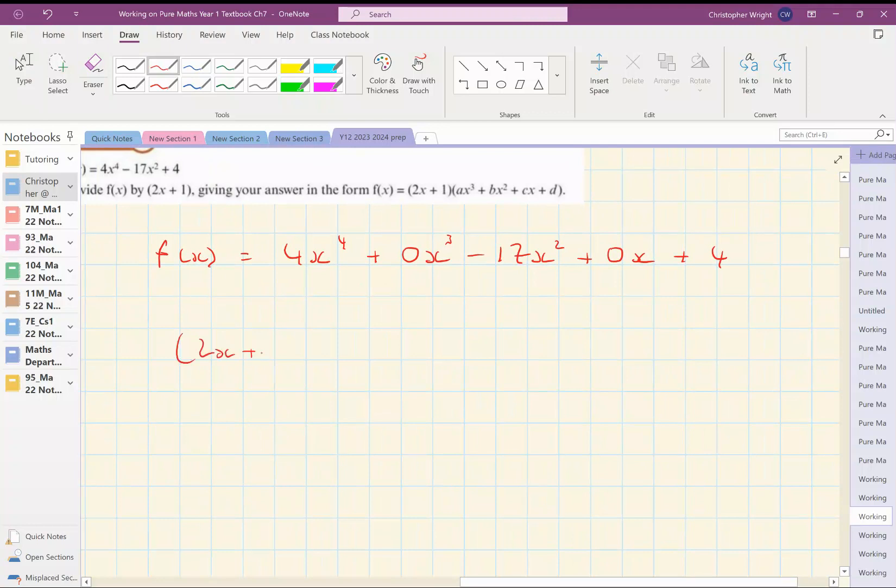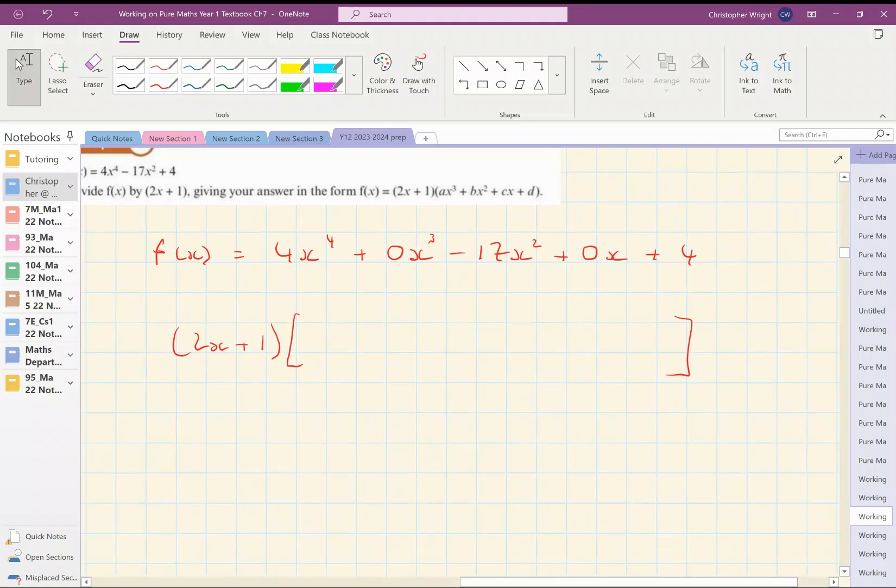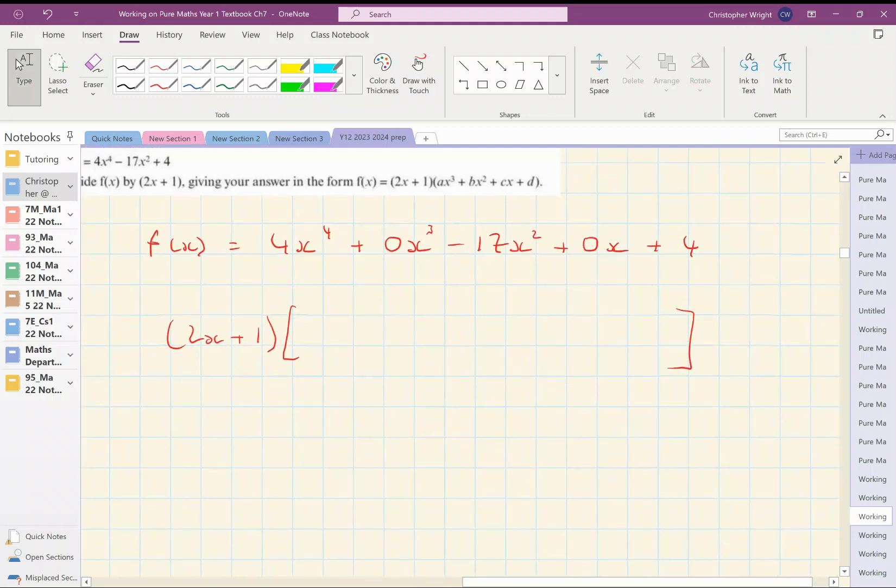(2x + 1) multiplied by something. So I'm going to find what needs to go into these square brackets so that the product of my two expressions is the original function. Now, 2x here to get 4x⁴ would need to be multiplied by 2x³. If I did that, 1 times 2x³ would give me 2x³ there.